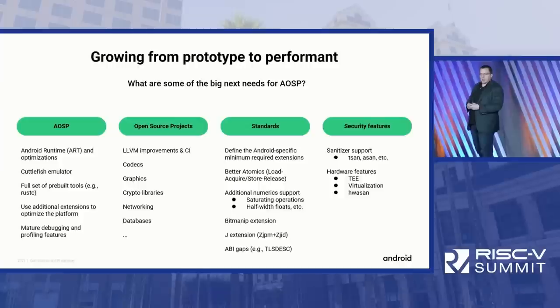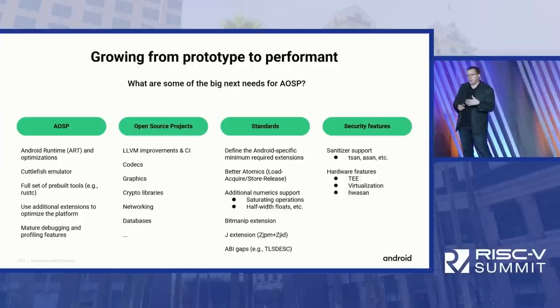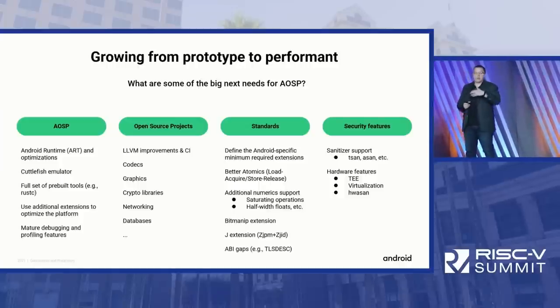Up until now, RISC-V has not had any official support inside of Android, and now Google are throwing their weight behind it, saying it will become a tier one — that means on the same level as ARM, on the same level as x86. It will be a tier one architecture for which you can build and run Android. So it's important for us that RISC-V be seen as a tier one platform by the rest of the ecosystem.